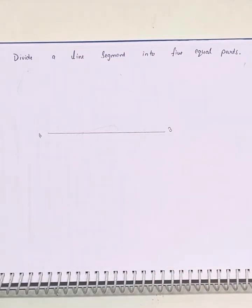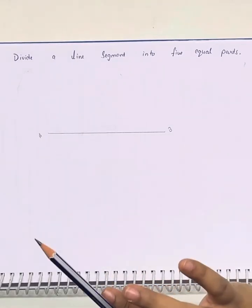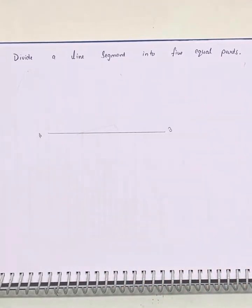Now we need to divide it in five equal parts. We don't know the length of this line, so all the parts will be of equal length. For this we will draw another line.